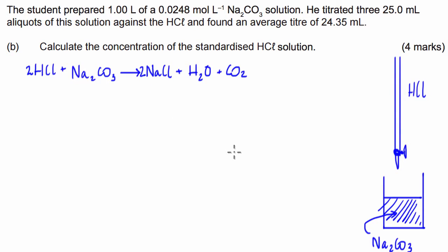The next thing we have to do is figure out the number of moles of Na₂CO₃ in the 25 mL aliquots that we've been given. So the number of moles of Na₂CO₃ is going to be equal to the concentration times the volume.